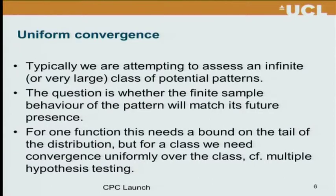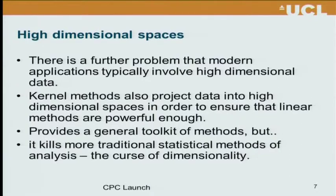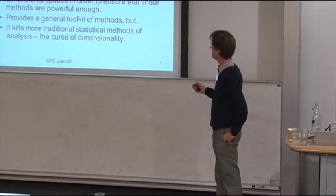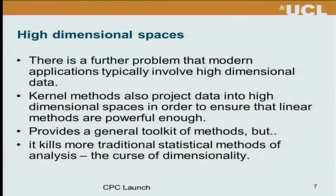We want to be sure that finite sample behavior will persist in future data. For one function this needs a simple bound on a tail of a distribution, but for a class of functions we need to get convergence uniformly over the class — equivalent to multiple hypothesis testing but with very large hypothesis classes. There's a further complication, very true in this project, that we're looking at high dimensional spaces. Modern applications typically throw up high-dimensional datasets and much of the traditional analysis has worked based on low-dimensional analyses, which will not carry across to high-dimensional situations with limited data.